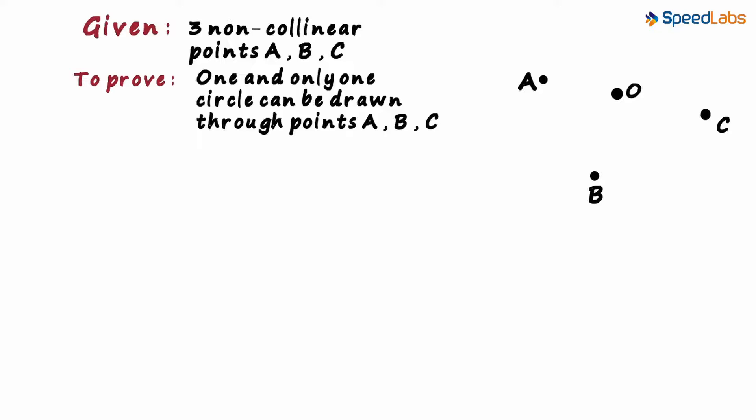Because all three segments OA, OB and OC will be the radii of the circle. But how do we get this point O is the question. We will need to do a bit of construction for that.